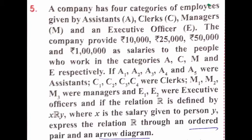We need to find the arrow diagram and set of ordered pairs. The salary side is X and the employees side is Y. We need to find the ordered pairs for the relation.